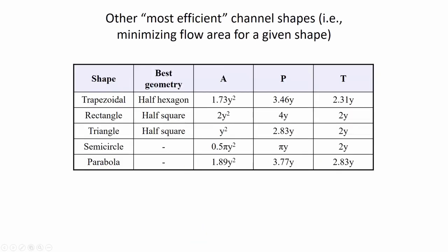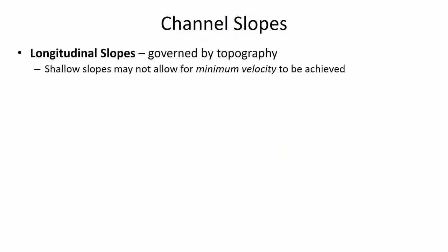We've talked about the best trapezoidal shape. The most hydraulically efficient rectangular channel is one that's a half square. The most hydraulically efficient triangular channel is also a half square, but turned on its edge.